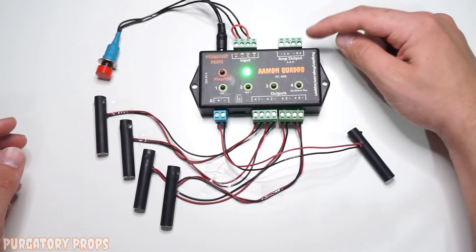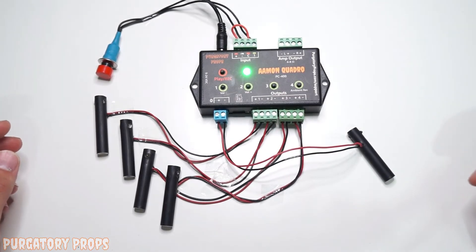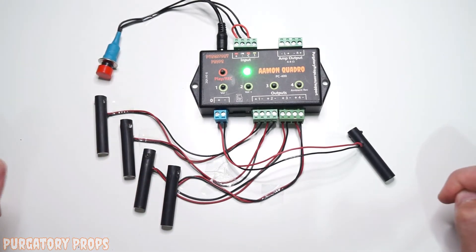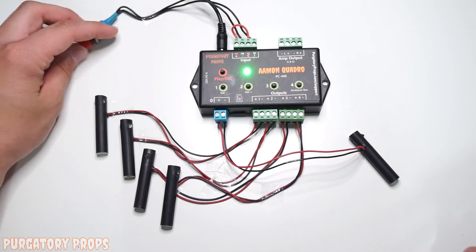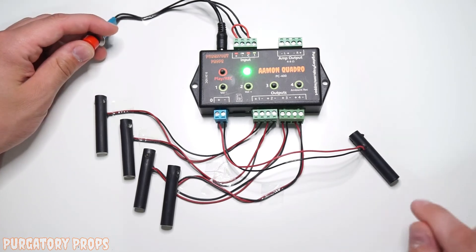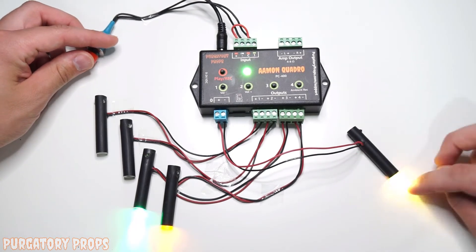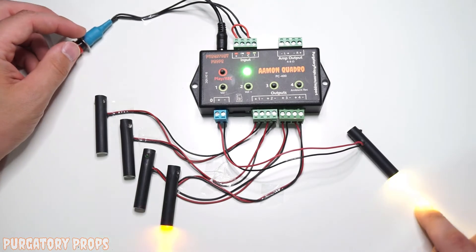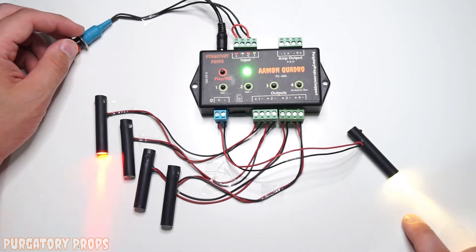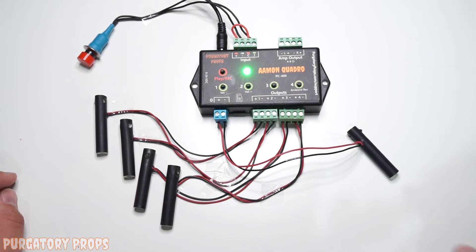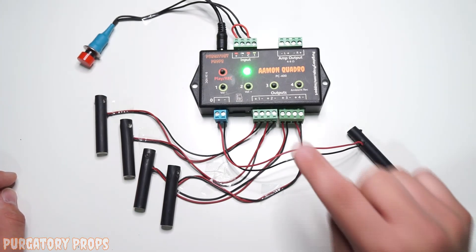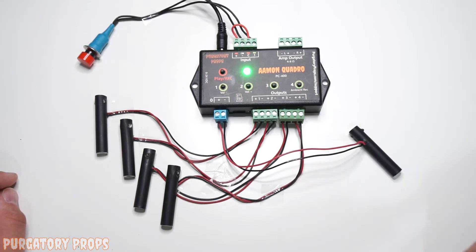Alright, we've gone ahead and disconnected our speakers for the sake of talking about output 0. Output 0 is something that really makes the Amon series of prop controllers special. If we plug in an LED here, trigger it, and then we'll see its default behavior. Notice the light comes on and stays on the entire length of the animation. And that can be used if you have a prop that sits in the dark. You can use that to turn on a light without wasting a precious programmable output.